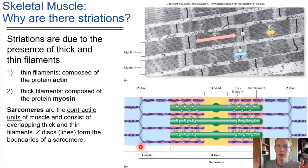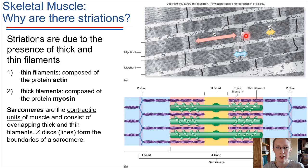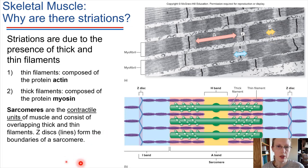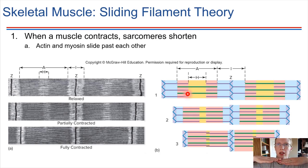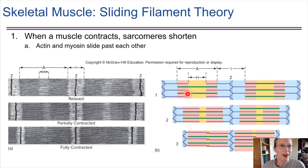This whole structure — actin and myosin put together — exists in a special unit called a sarcomere. Sarcomeres are bounded on both sides by dark lines called Z-discs or Z-lines, which provide the boundary between adjacent sarcomeres. During a contraction, the filaments slide past each other: we start with actin and myosin overlapping a little bit, and as contraction takes place, those filaments slide past each other. The muscle ends up shortening as a result. This is called the sliding filament theory of how muscles contract.